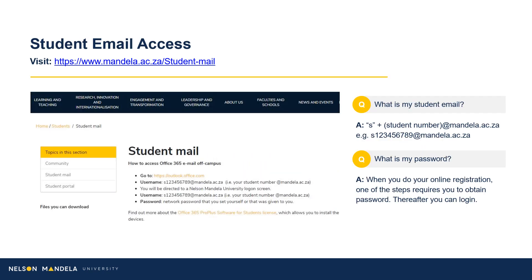Student Email Access: Email being the institution's primary medium of communication, we advise that you set up your email address as soon as possible. Please visit the link provided on screen to access your student email. Your student email address begins with the letter S for student, followed by your student number at mandela.ac.za. The password requested would be the one obtained or created in step 11 of this registration process.